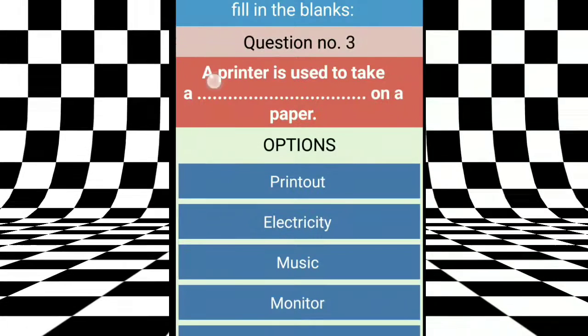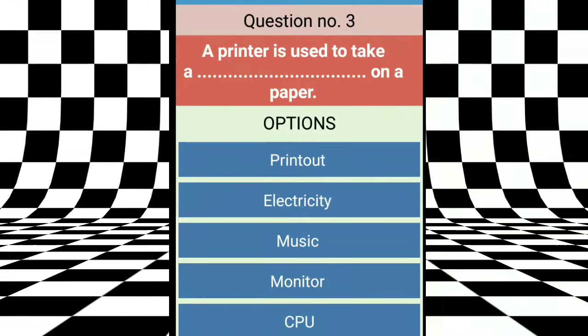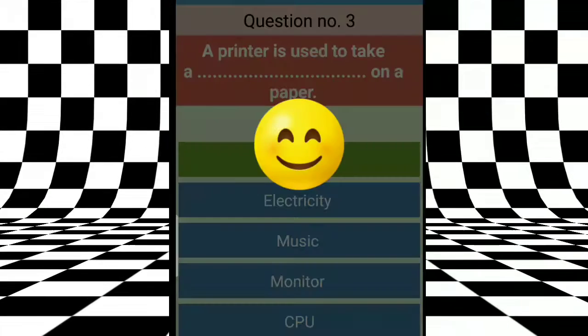Question number 3 is, a printer is used to take a dash on a paper. So, for what printer is used? Printer ko use kiya jata hai to take a dash, lene ke liye, kya lene ke liye? On a paper, paper pey kya lene ke liye? Hum printer ko use kerte hai. We can take the printouts using a printer. So, the right answer is printout. Right answer.